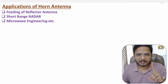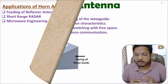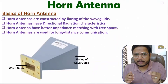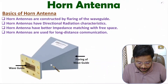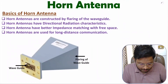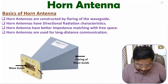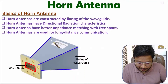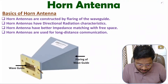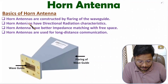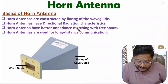Let us begin with the basics of horn antenna. The structure of horn antenna is based on flaring of the waveguide. The input is given by a waveguide whose dimensions are quite small. By giving flaring to the waveguide we can enlarge the dimensions. So with waveguide we have smaller dimensions and after providing flaring we are enlarging those dimensions with the horn antenna.